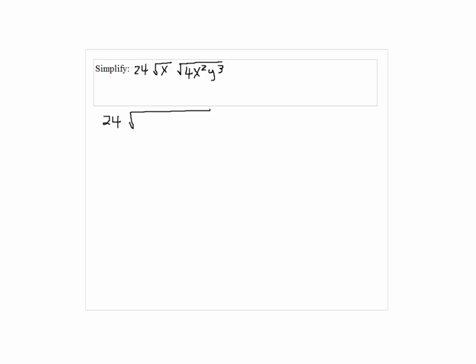First, we can multiply the inside square root, so we have 4x cubed y cubed.